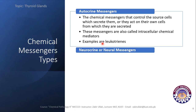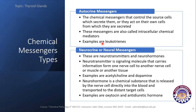The neurocrine messengers are neural messengers, which include neurotransmitters and neurohormones. A neurotransmitter is a signaling molecule that carries information from one nerve cell to another or from muscles to tissues — examples include acetylcholine and dopamine. A neurohormone is a chemical substance released by nerve cells directly into the blood and transported to distant target cells; examples include oxytocin and anti-diuretic hormone.